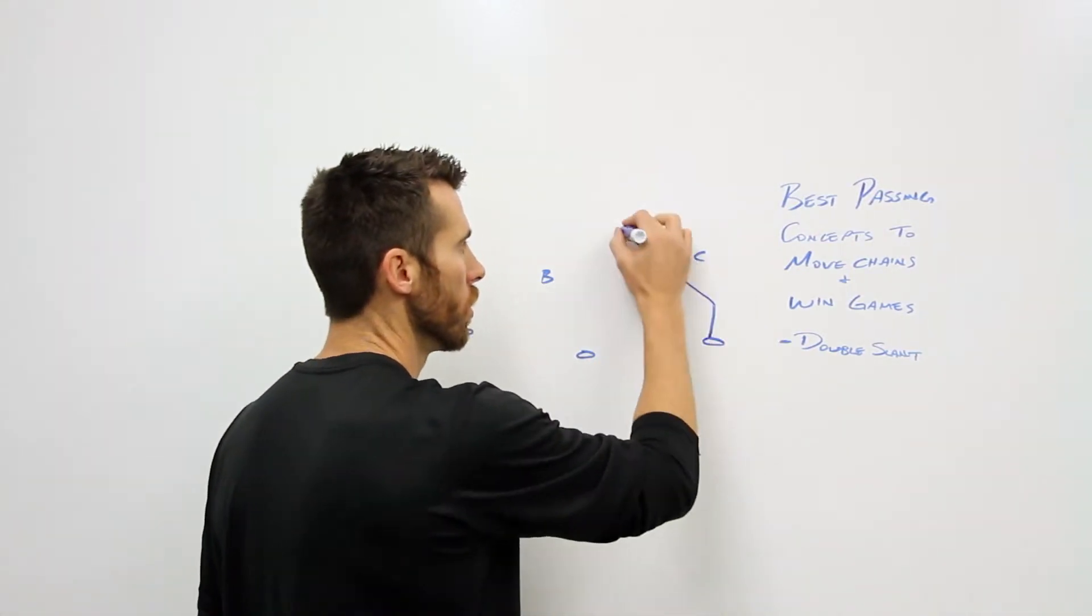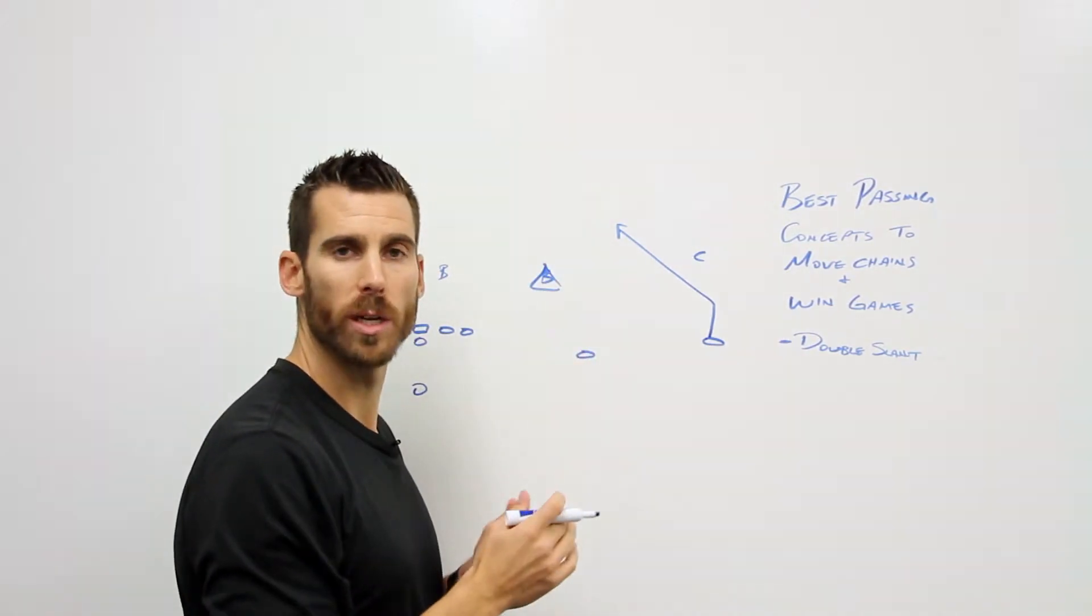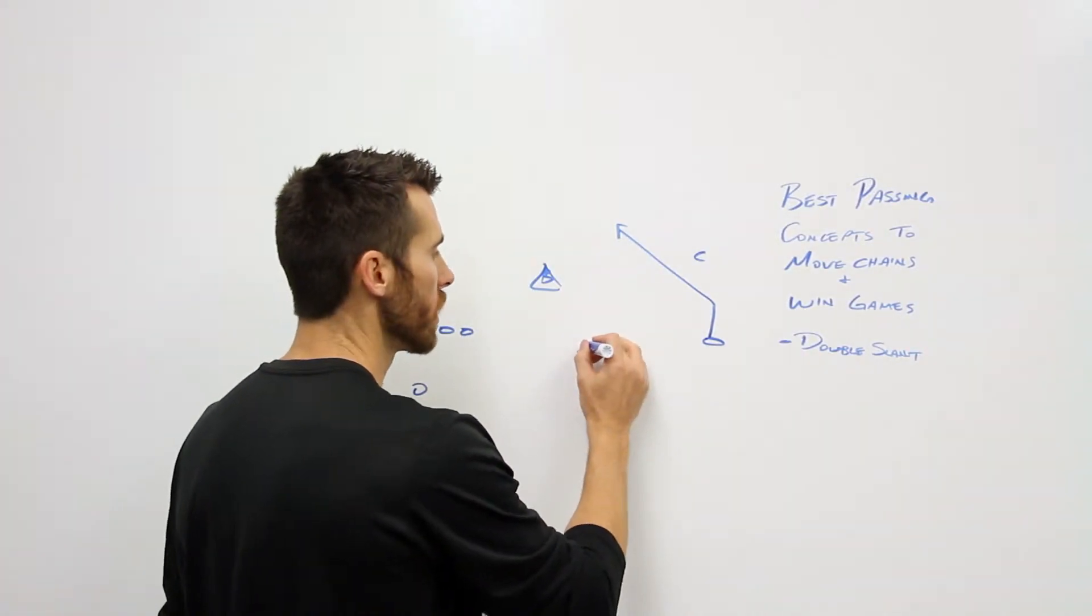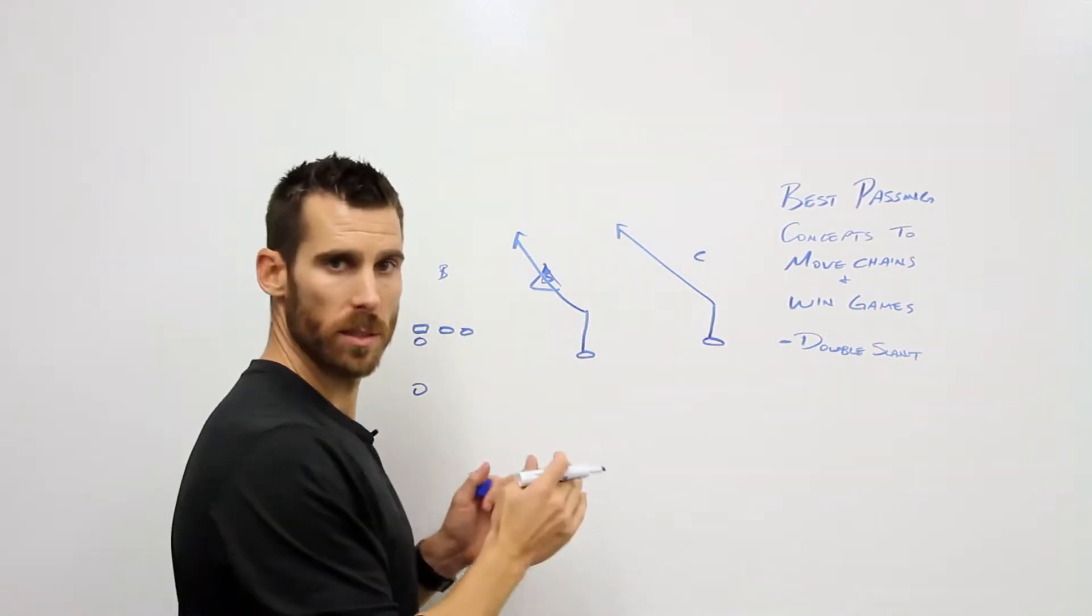Now what we want to do with those double slants is we want to stress the number two defender. It's a lateral stress but this is a flow stress rather than a cross stress. So we want to set up that slant and work inside of number two. And it's pretty simple.